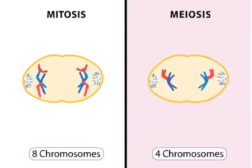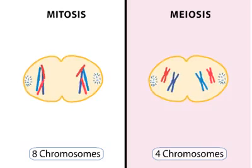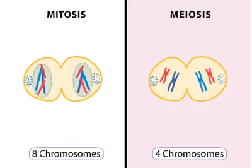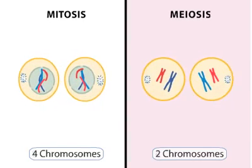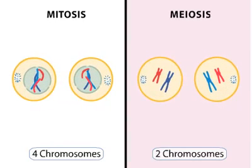As a result of this difference in how the chromosomes line up on the metaphase plate, after the cell divides, the chromosome number remains the same in mitosis, whereas it is reduced to one half in meiosis.